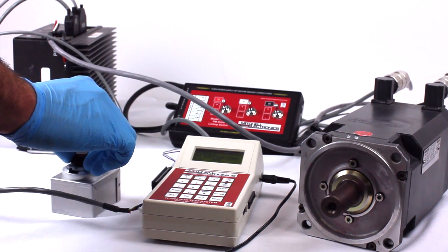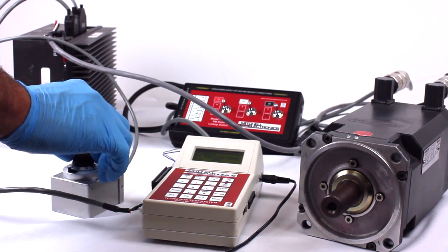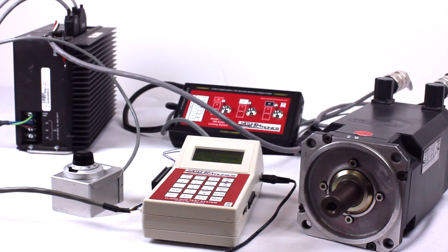Spin the motor up to max speed and record the RPM. This size motor is running at 1240 RPM from a 120-volt AC source.